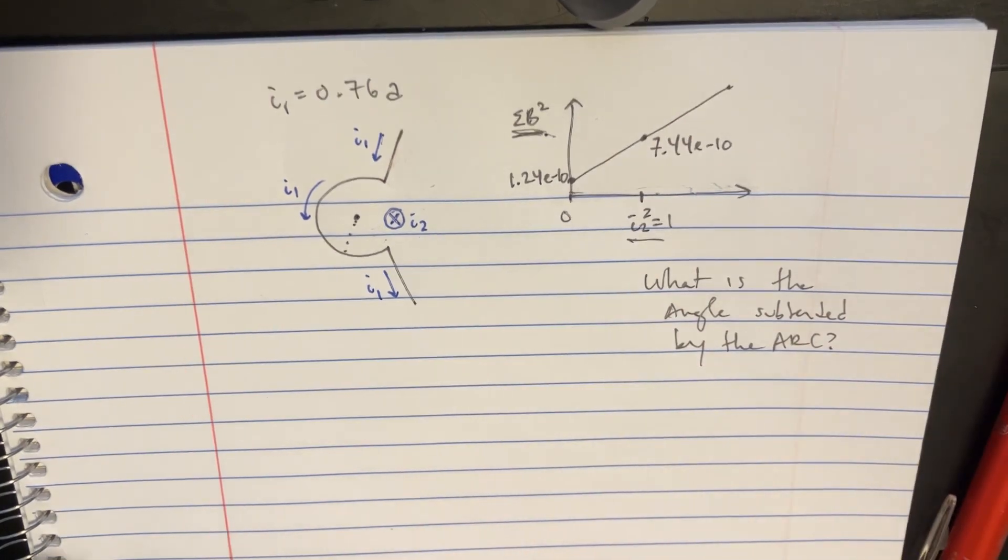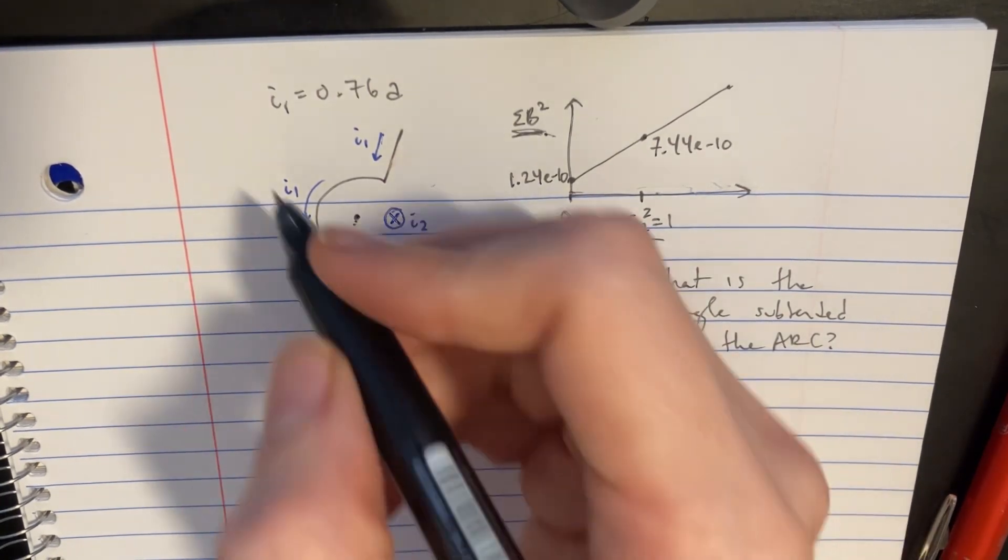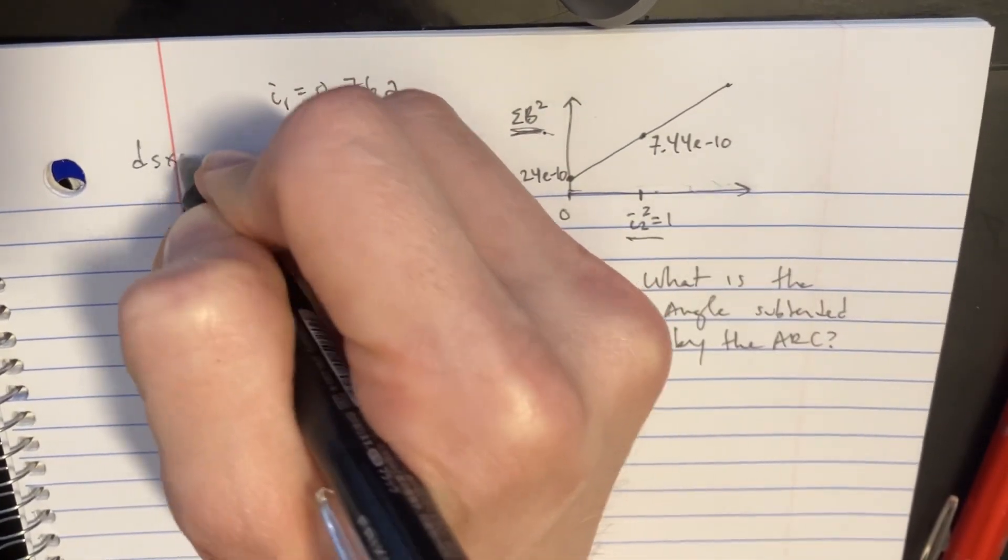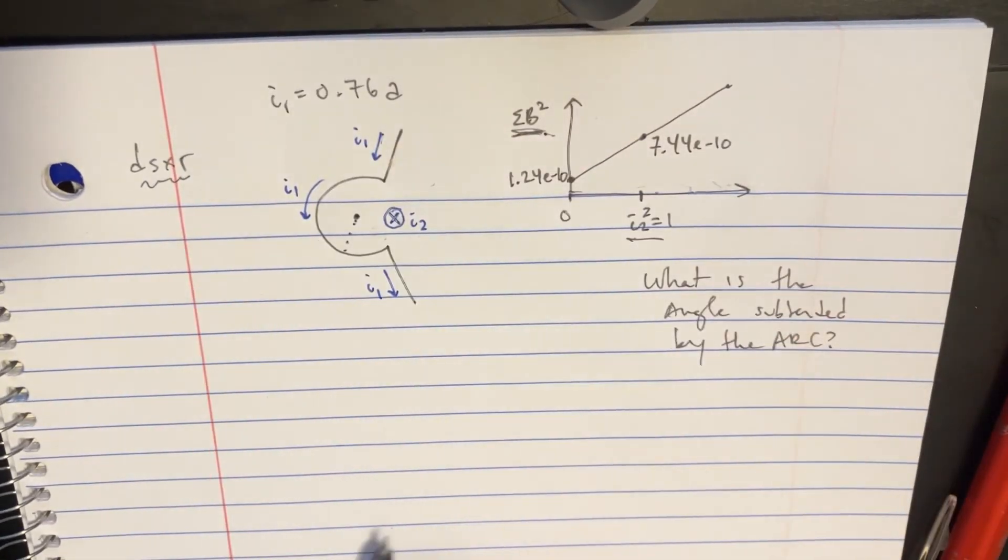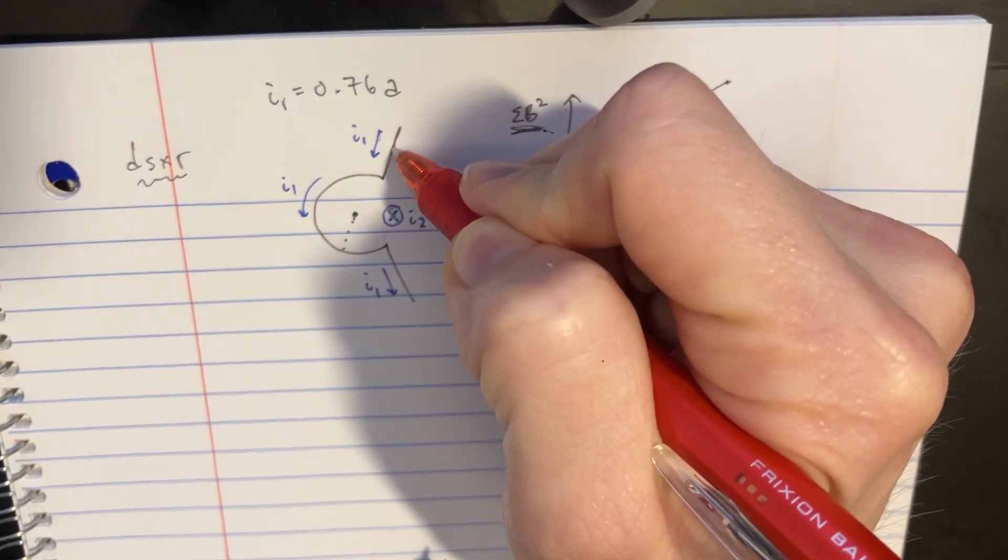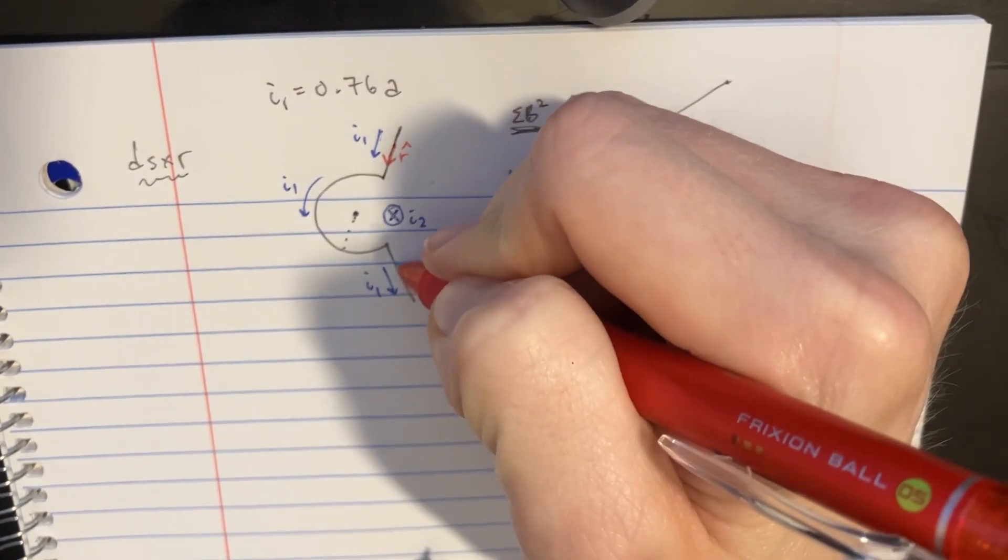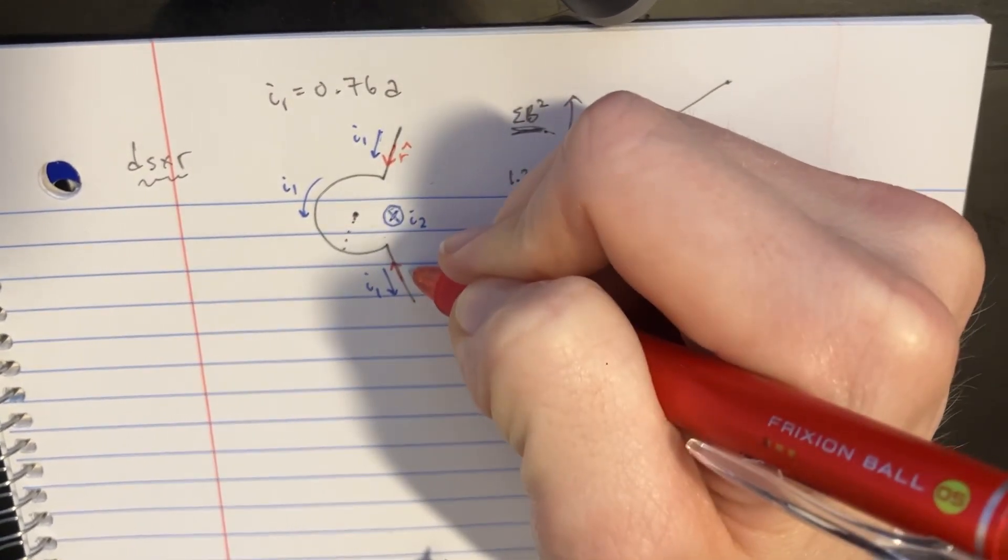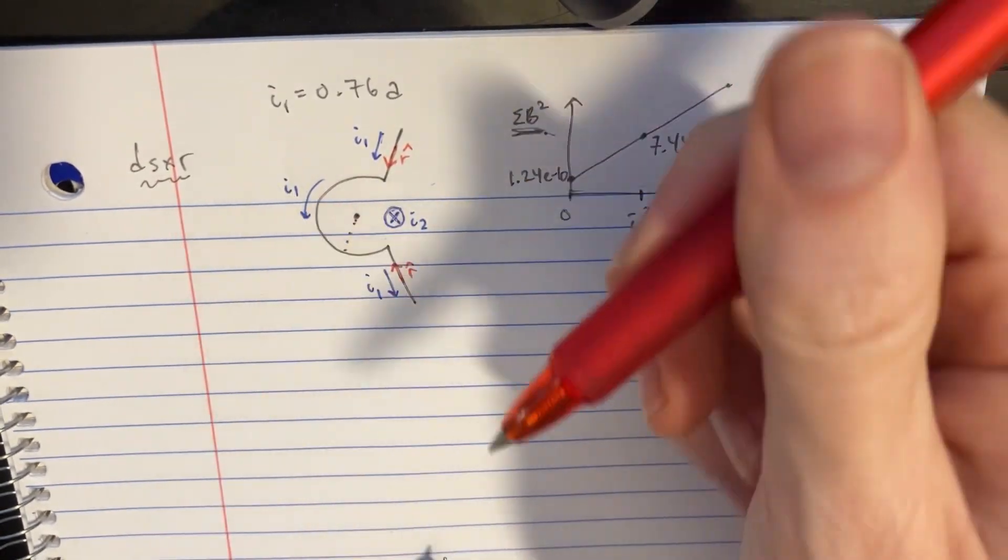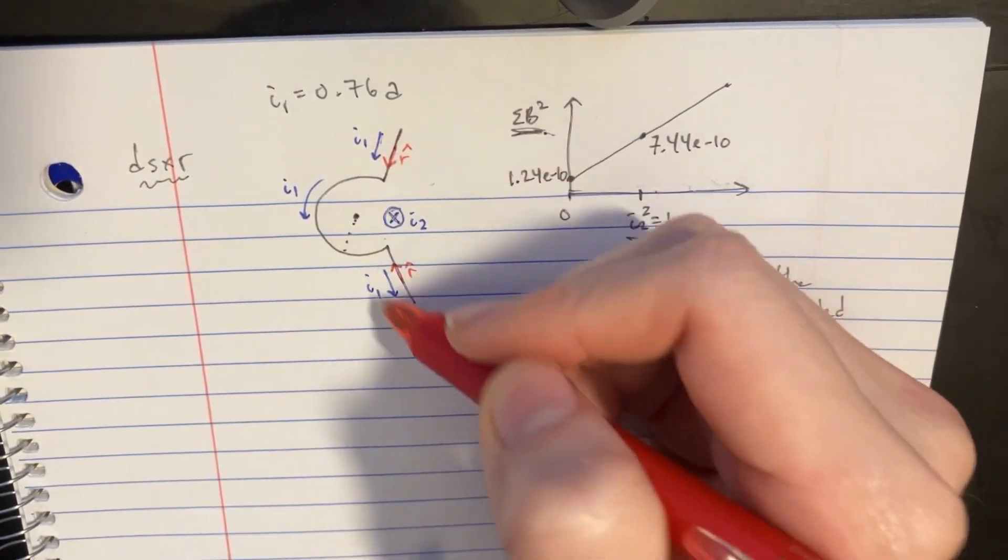We're going to sort of use the DS cross R to kind of imagine what's going on here. Because remember that the R vector is like this, and for both of these edges over here, the R vector is actually lined up with the current vector.